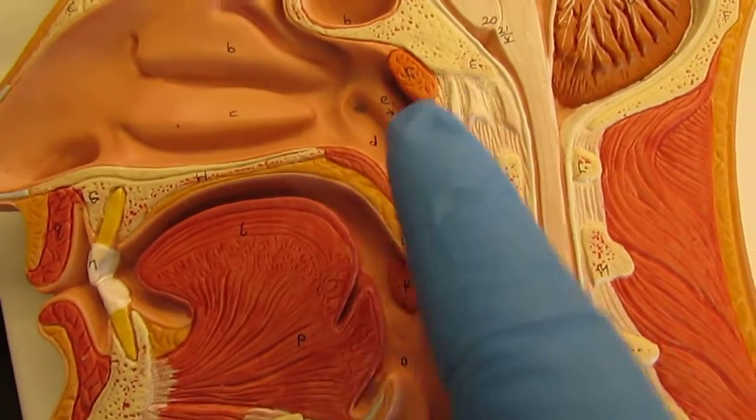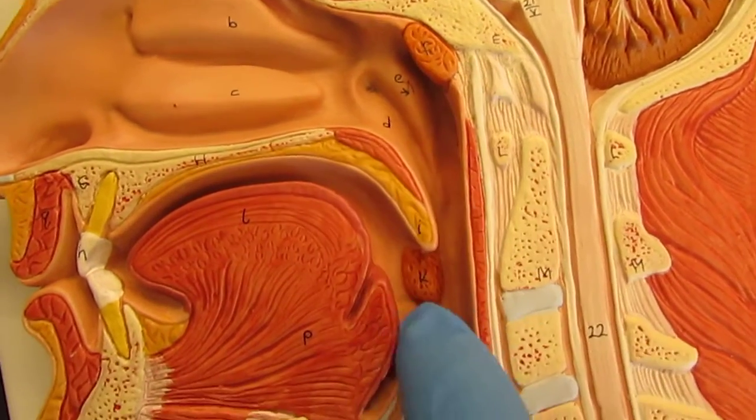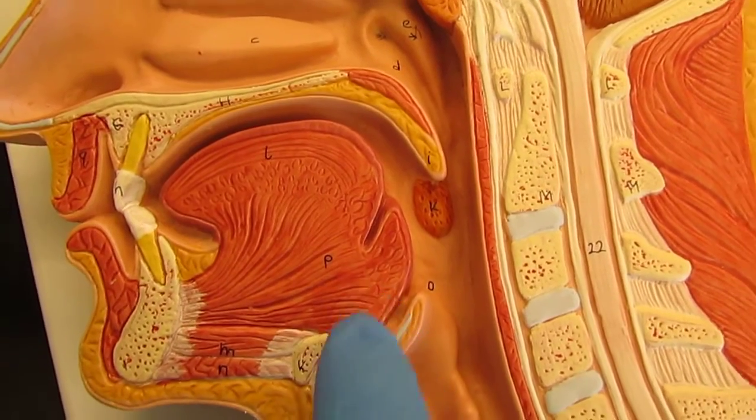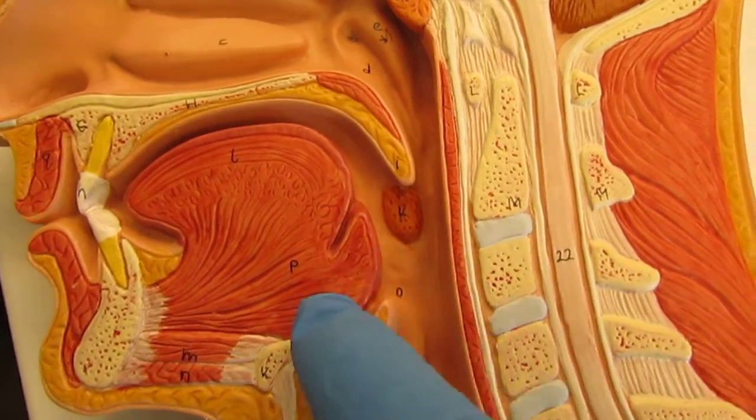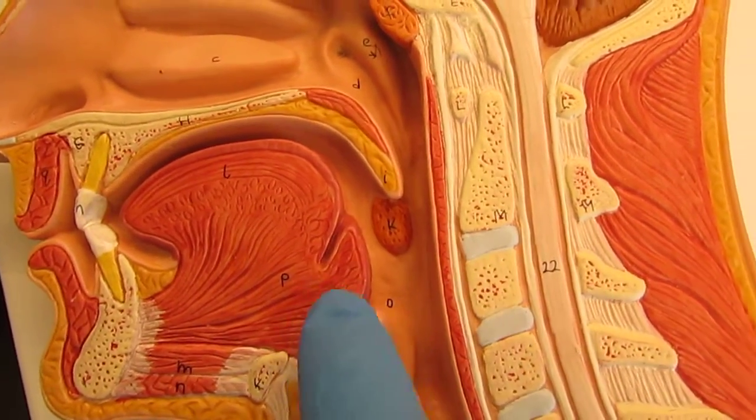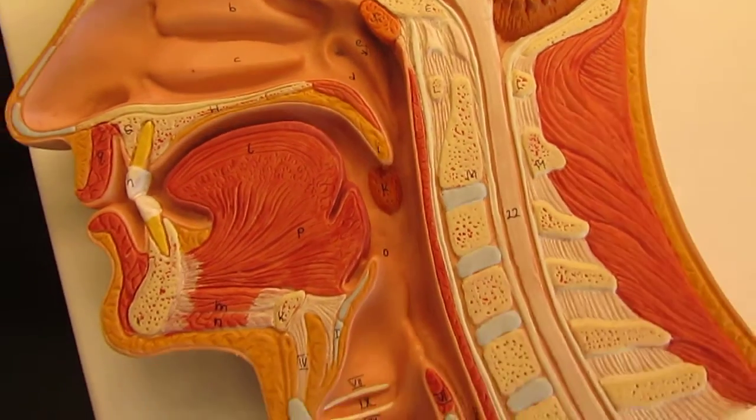And finally, the lingual tonsil. So pharyngeal, palatine, and lingual tonsil. The lingual tonsil looks a little bit different. It looks like a little bump off the back of your tongue, but that is also lymphatic tissue.